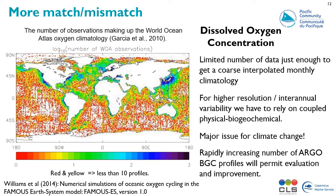The concentration of dissolved oxygen in the ocean is still poorly observed at global ocean scale. The most-used dataset is likely the World Ocean Atlas, which compiles all available oxygen profiles. However, as seen on this map, a very large portion of the global ocean is drastically undersampled, and only average monthly interpolated 3D fields can be produced from this database. We need to rapidly increase our capacity to monitor changes in this variable, especially given the pressing issue of climate change and ocean warming.